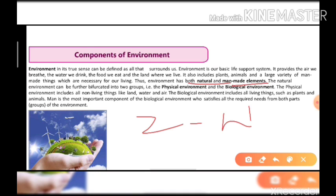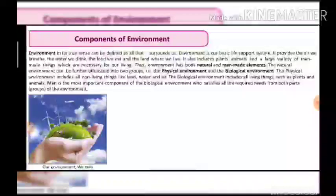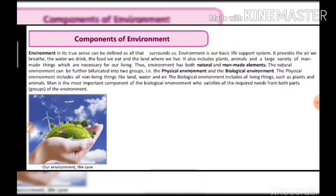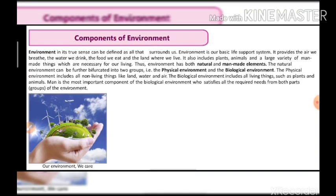The physical component includes non-living things like land, water, and air. The biological component includes all living things such as plants, animals, and human beings. These are the man-made elements of the biological environment — nature, animals, and human beings.